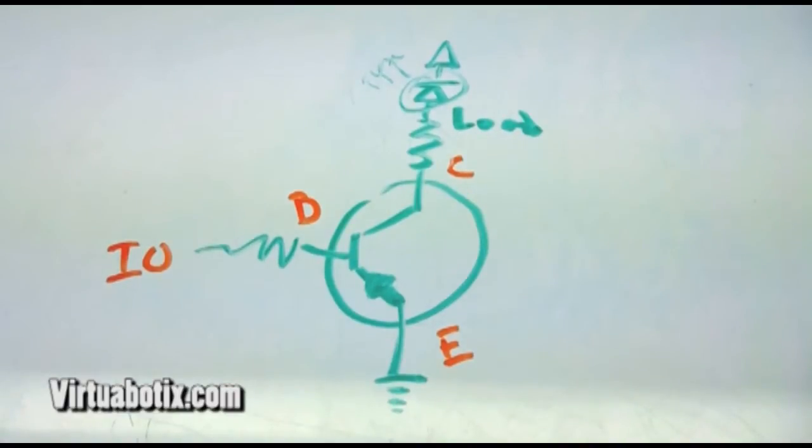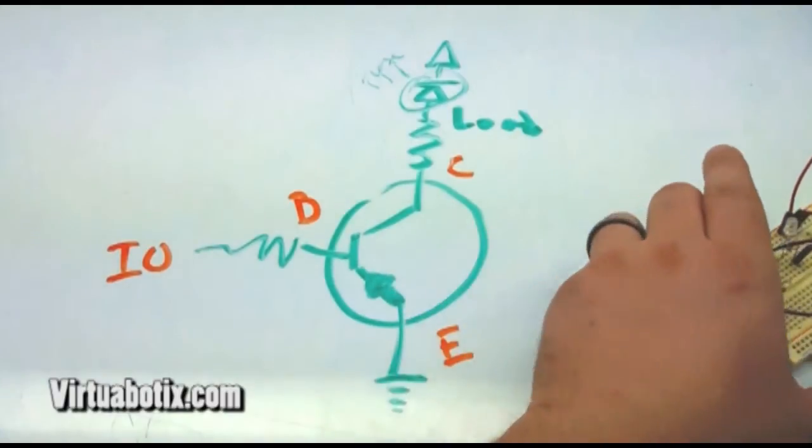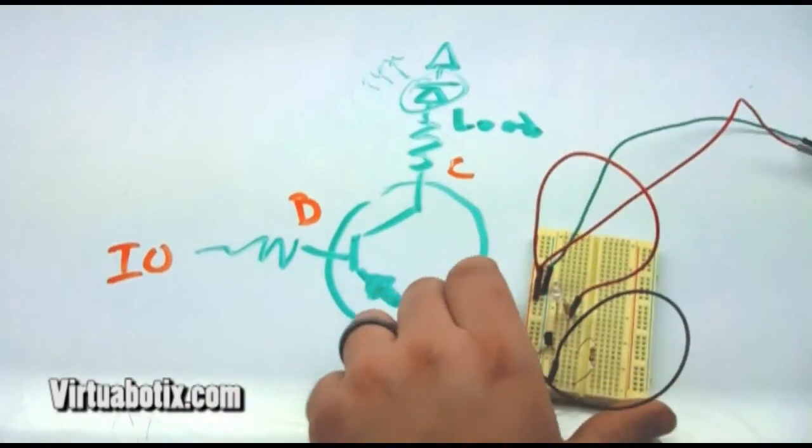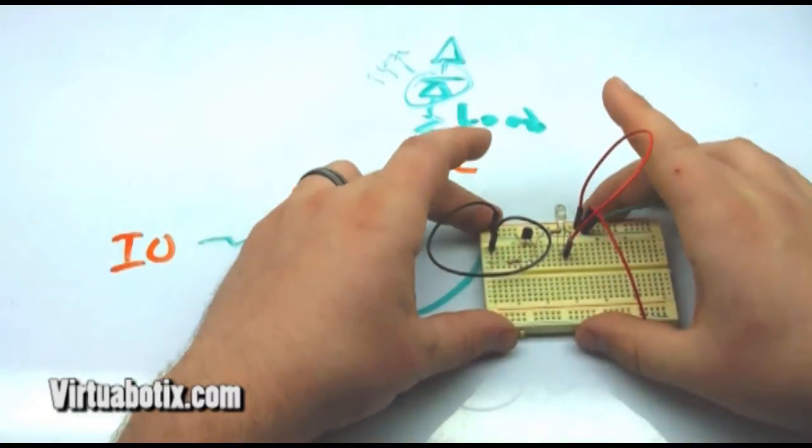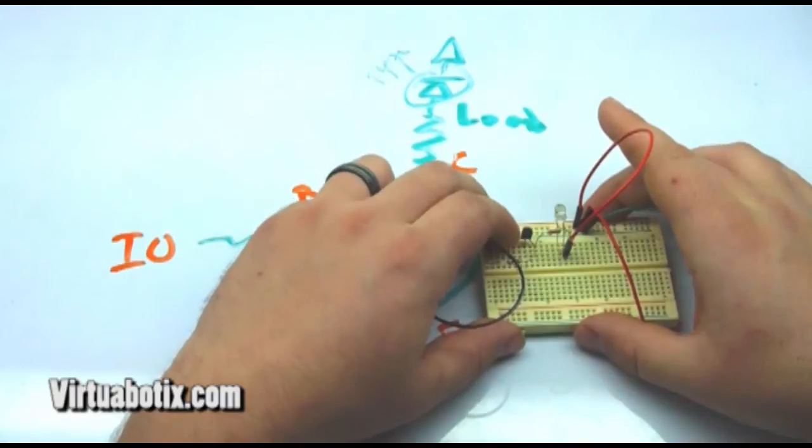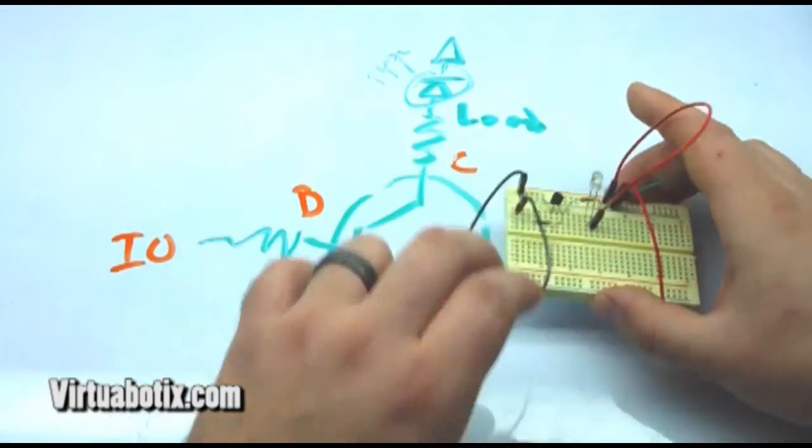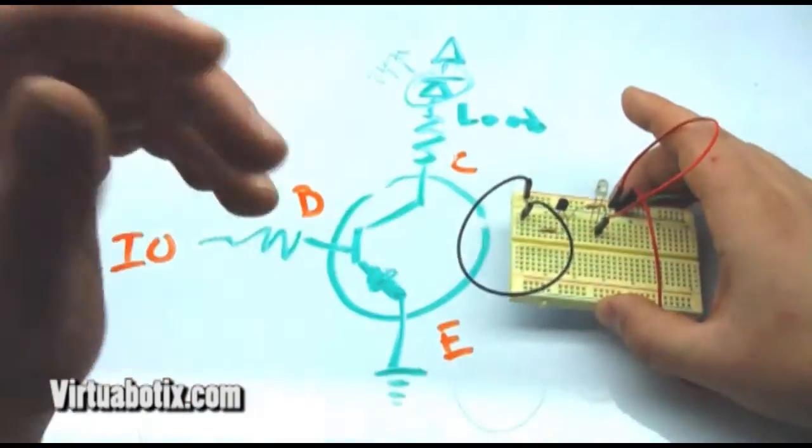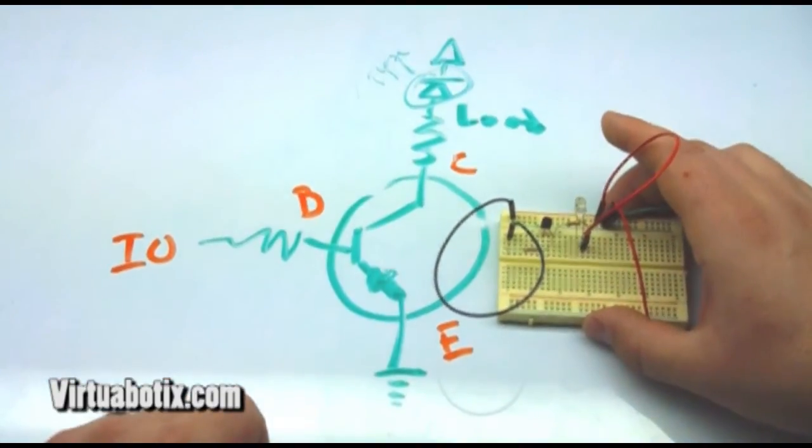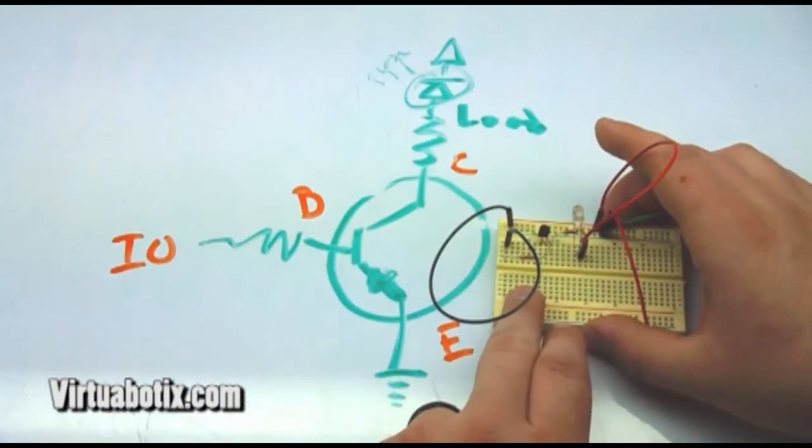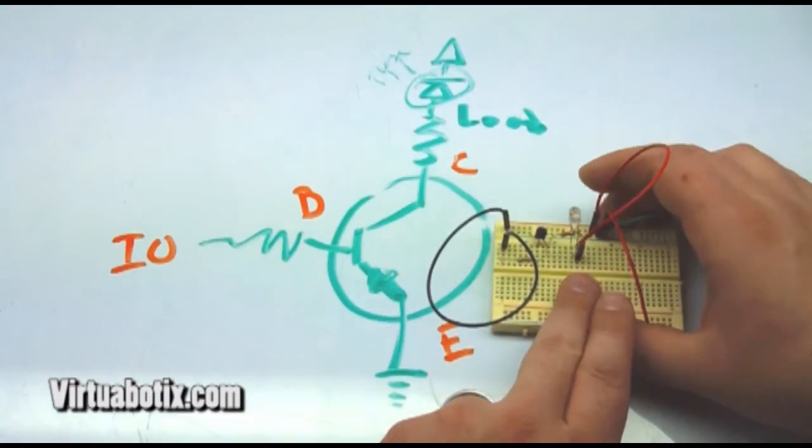This circuit should look pretty familiar. Basically, it's the same one we had before, except rather than using a jumper wire, I just took the emitter straight to ground to save the trouble. I still have the thousand ohm resistor here, and the hundred ohm, and then the light.